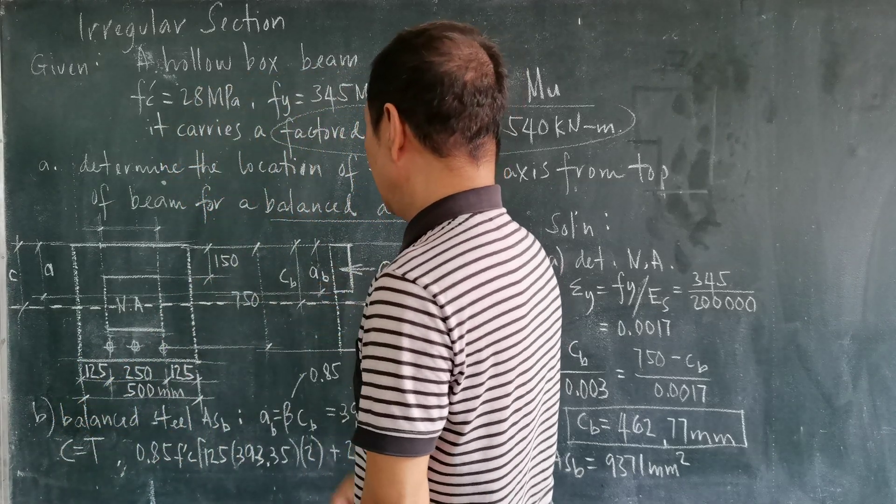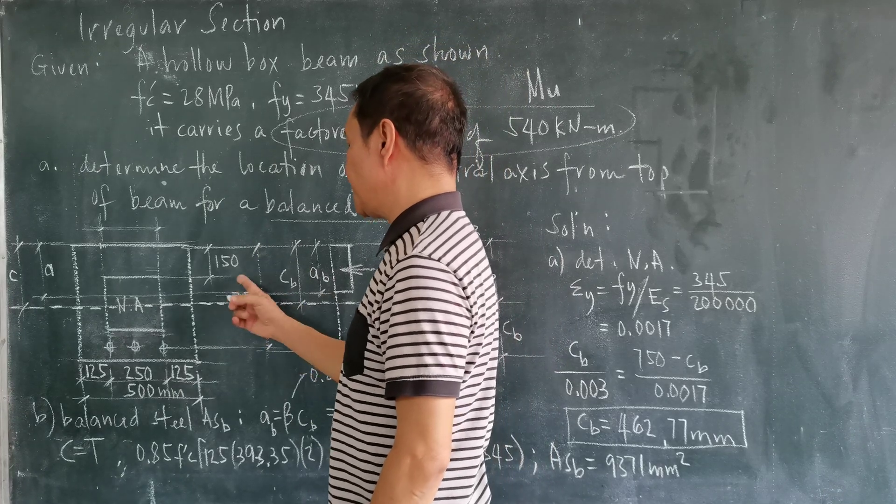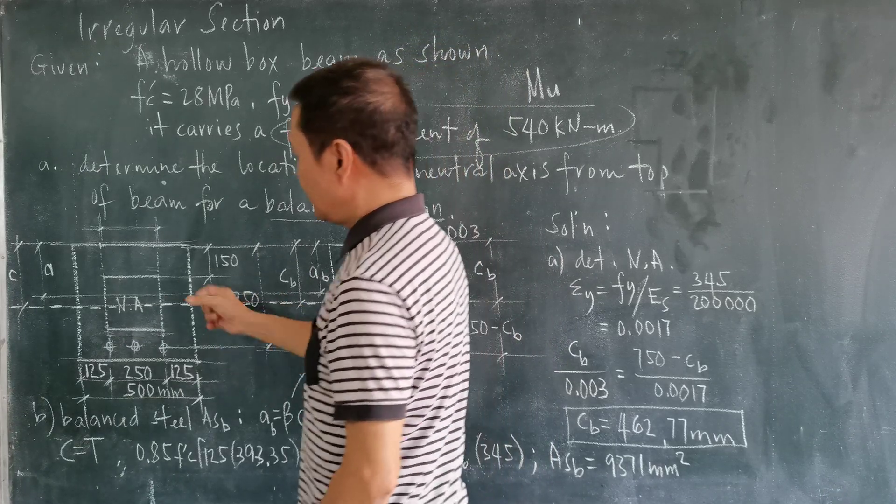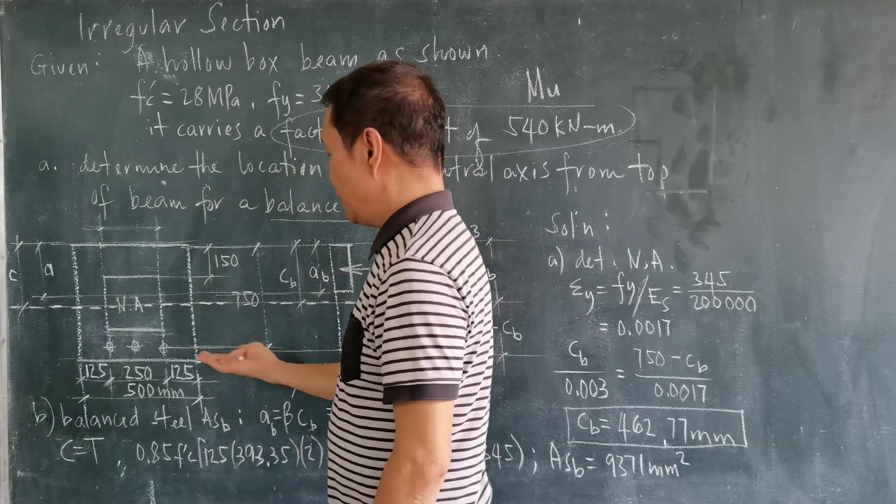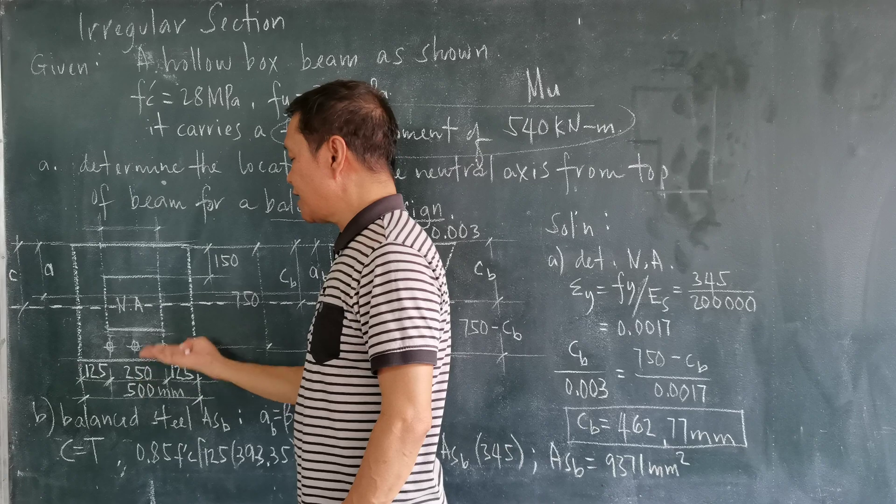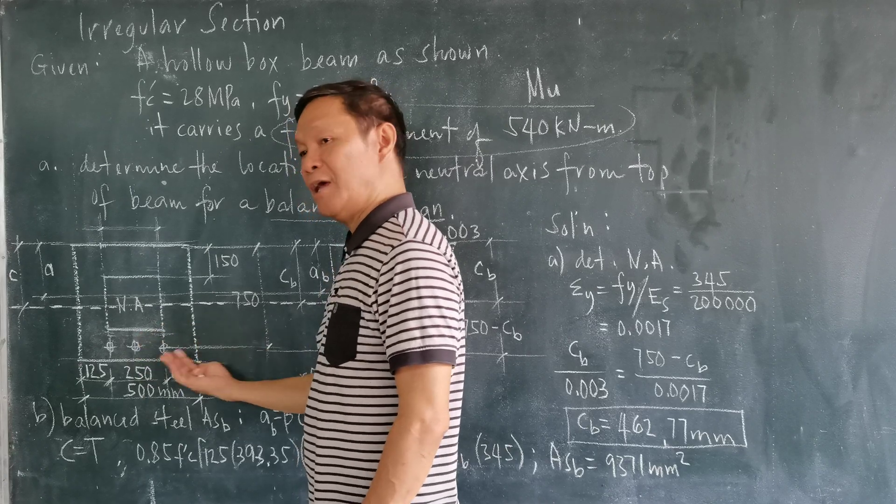The width of this hollow part of the box beam is 250, so the total base is now equal to 500 mm. The effective depth is 750 mm. The thickness of this part is 150 mm.